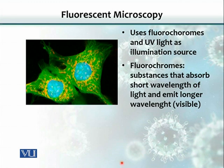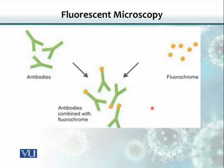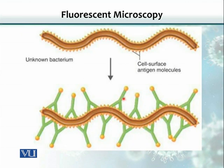Another version of light microscopy is the fluorescent microscope, where special dyes called fluorochromes are used. These are substances that absorb short wavelengths of light but emit longer, visible wavelengths of light. Fluorochromes are attached to antibodies, and because antibodies are specific against different organisms, those microbes can be stained specifically by these antibodies. As these antibodies have dye tags associated with them, when we visualize the images under the microscope, they fluoresce and emit different colored lights.